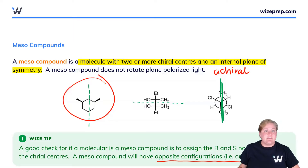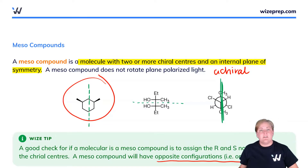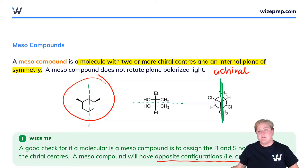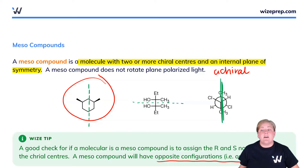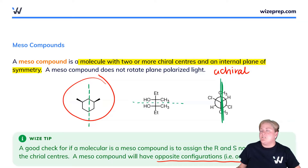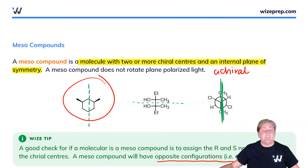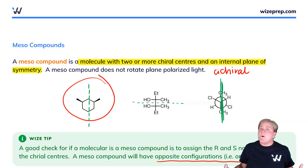That's it for optical isomers — enantiomers, diastereomers, and meso compounds — called optical isomers because we quantify them using optical activity. Enantiomers are different at all chiral centers and require one or more. Diastereomers require two or more chiral centers and differ at some but not all. Meso compounds are a special type of molecule that contain chiral centers but are overall achiral due to an internal plane of symmetry, which you can find by folding the molecule in half or by assigning R and S and looking for opposite labels.